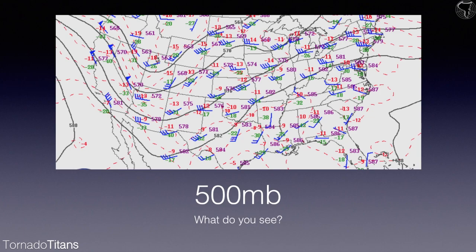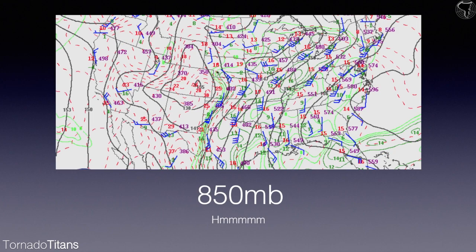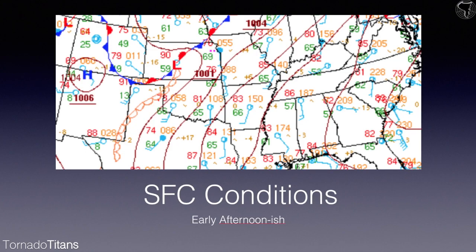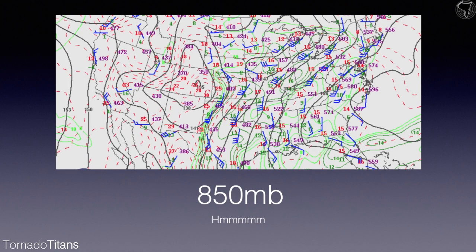Looking at 850 millibar winds, you have some backed 850s right through here with moisture pulling back into southwest Nebraska. There are southwesterly 850s through central Kansas and southerly 850s down into northwest Oklahoma. There are 40-knot 850s in central Oklahoma, but that's not really a factor since there's no boundary there. However, there's a decent low-level jet — 60 knots checking in right at Amarillo, out of the south-southwest. That's something to watch.